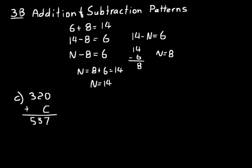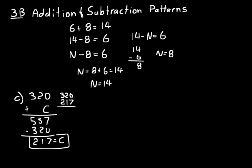Look at practice problem C: 320 plus C equals 537. When we have a missing addend, we subtract the known addend from the sum to find it — that's the inverse operation, subtraction. 537 minus 320: 7 minus 0 is 7, 3 minus 2 is 1, 5 minus 3 is 2. So C equals 217. We can check: 320 plus 217 — 0 plus 7 is 7, 2 plus 1 is 3, 3 plus 2 is 5 — gives us 537.